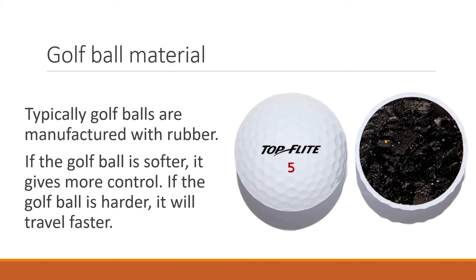The material of the golf ball is also important. Nowadays golf balls are typically manufactured with rubber. If the golf ball is softer, it gives more control, whereas if the golf ball is harder, it'll travel faster. Golf balls of the past used to be made with other materials — they were even handmade, and since they were handmade, they weren't perfectly round. That could affect how the ball moves through the air and may skew it in one direction.